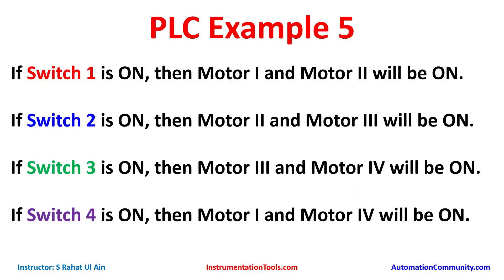If switch 1 is on, then motor 1 and motor 2 will be on. If switch 2 is on, then motor 2 and motor 3 will be on. If switch 3 is on, then motor 3 and motor 4 will be on. If switch 4 is on, then motor 1 and motor 4 will be on. So for motor 1 to be on, either switch 1 or switch 4 should be on. For motor 2, either switch 1 or switch 2. For motor 3, either switch 2 or switch 3. For motor 4, either switch 3 or switch 4. We will use normally open contacts and implement an OR logic gate.